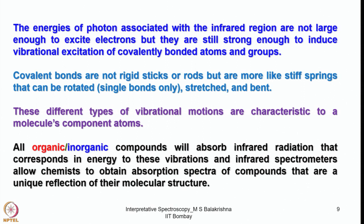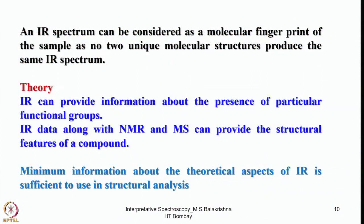Covalent bonds are not rigid rods but are more like stiff springs that can be rotated (if single bonds), stretched, or bent. These different types of vibrational motions are characteristic of a molecule's component atoms. All organic and inorganic compounds absorb infrared radiation corresponding in energy to these vibrations, giving absorption spectra that are a unique reflection of their molecular structure. An IR spectrum can be considered a molecular fingerprint — no two unique molecular structures produce the same IR spectrum.